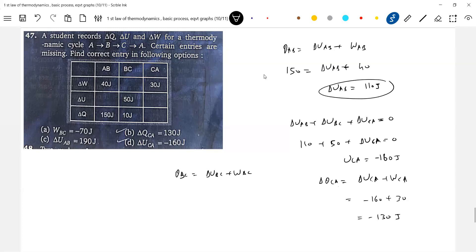Q_BC, so we know Q_BC is 10, ΔU_BC is 50. So it's minus 40 joules.